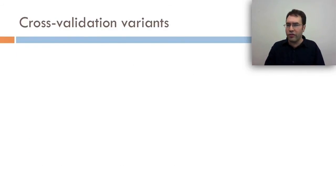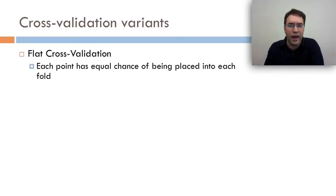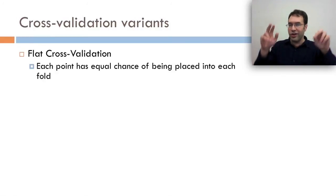So there's a bunch of cross-validation variants. First one is flat cross-validation. In flat cross-validation, each point has equal chance of being placed into each fold. You'll also just see flat cross-validation called cross-validation.